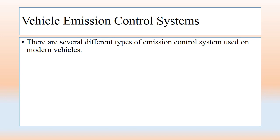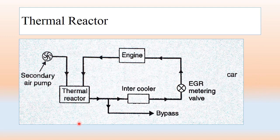There are several different ways to control emissions in modern vehicles. New technology is arriving day by day, and by using these new technologies, one can control emissions. The first method we will discuss is the thermal reactor, which is one method to control emissions.